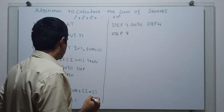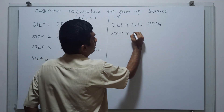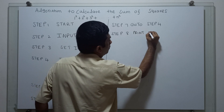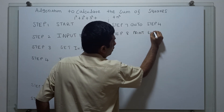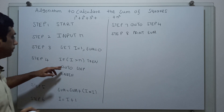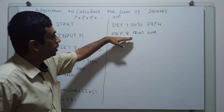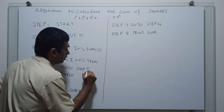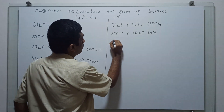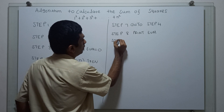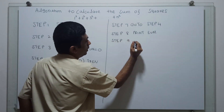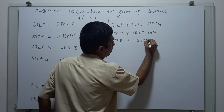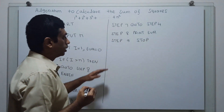Step 8: we have to print the result — print sum. So here, when i is greater than n, we have to move the control to step 8 to print the result. Step 9: this is the logical end of the algorithm — stop.